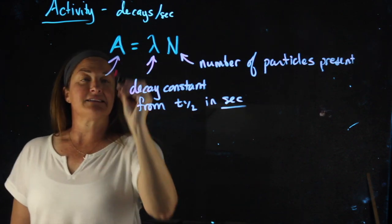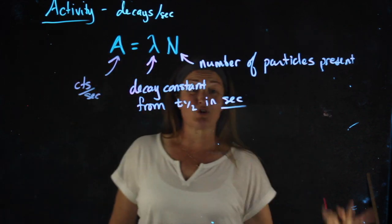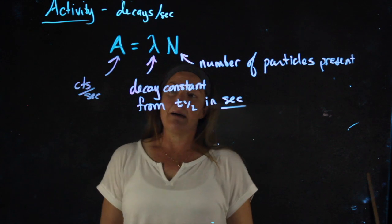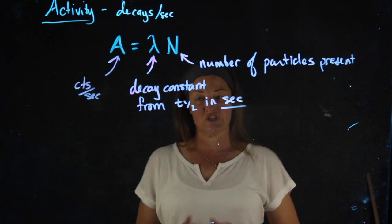A is going to be the activity, which can be in counts per second, decay per second, disintegrations per second. There's a bunch of different ways of saying it, but it's the number of atoms that are disappearing over the course of time, or really changing into something else.